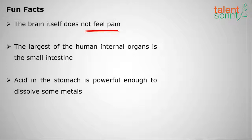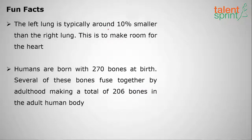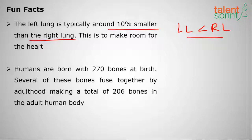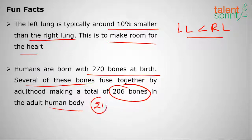The brain itself doesn't feel any pain — all other parts do, but not the brain. The largest internal organ is the small intestine, and the acid in the stomach is powerful enough to dissolve some metals, such as hydrochloric acid. The left lung is around 10 percent smaller than the right lung to make room for the heart. Humans are born with 270 bones, but by adulthood several fuse together, resulting in 206 bones by age 21.